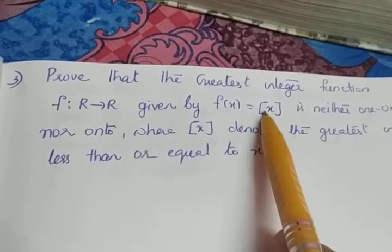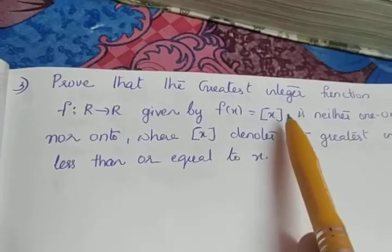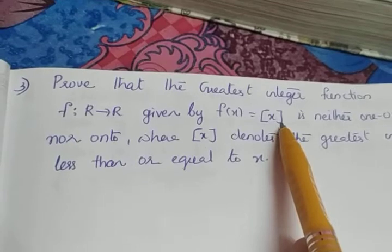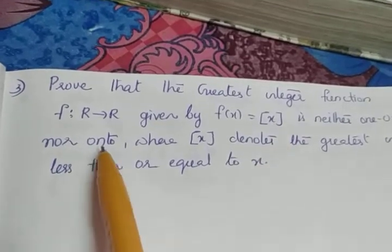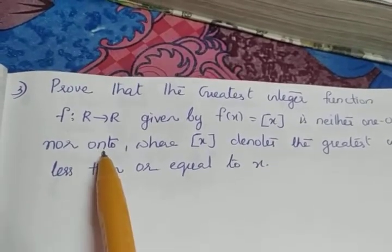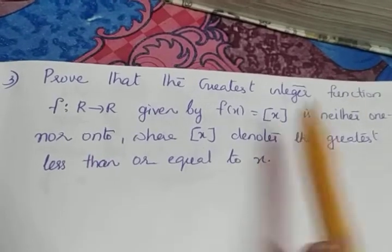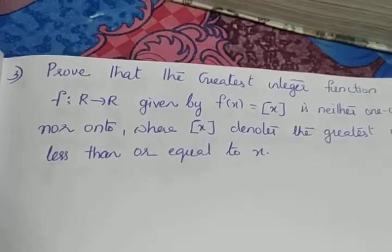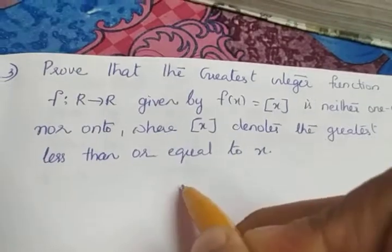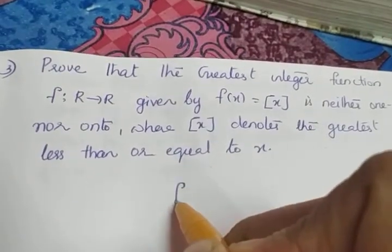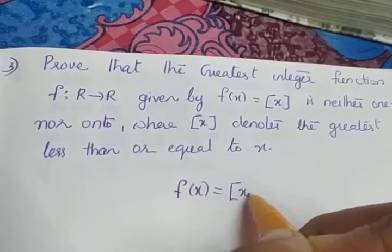To prove it is not one-one, we just take an example and show that it is not one-one. Same way, we will take another example to show that it is not onto. So, f(x) = ⌊x⌋ is the greatest integer function.